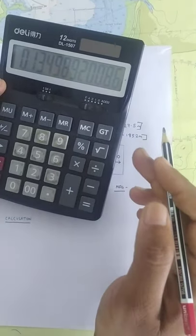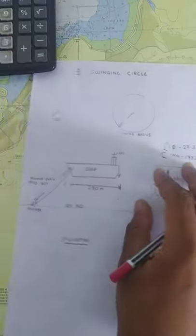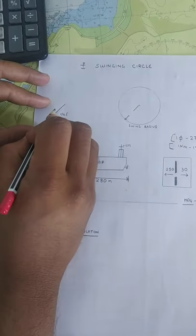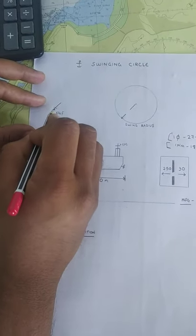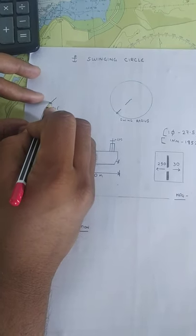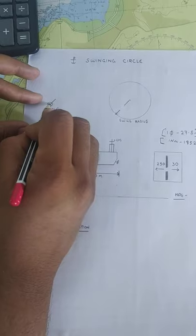That is nearly one and a half cables. Take your compass with the heading, cut that position on your chart. This will be the point from where you have to start calculating your swinging circle.